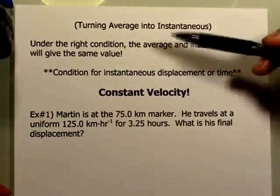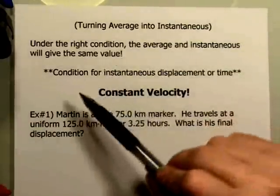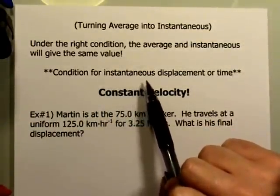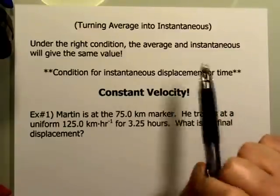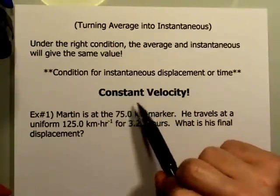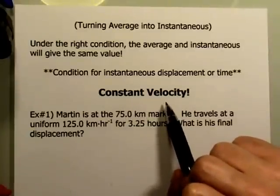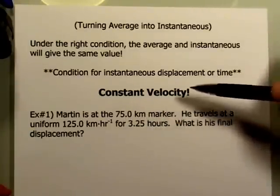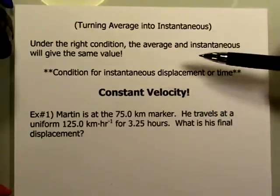The condition for that, the condition we're looking for to be able to calculate the instantaneous displacement or time, is if the velocity is constant. If our velocity never changes, then there is no difference between the average velocity and the instantaneous velocity.